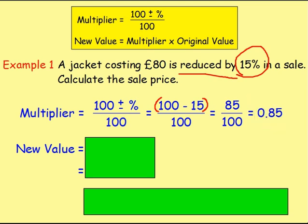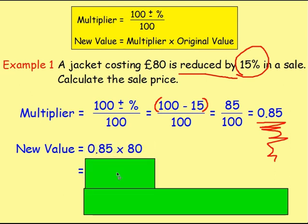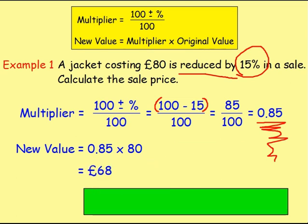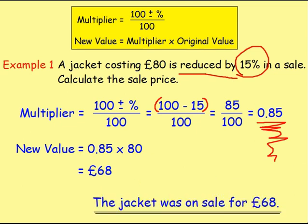So that is our multiplier — 0.85 is the important number we are going to use to work out the sale price of the jacket. To work out this new value, this new amount, this price, you take your multiplier — the 0.85 — and you multiply it by the original value of the jacket. So you do 0.85 times 80, and if you work that out, you get £68. So the jacket is on sale at £68.